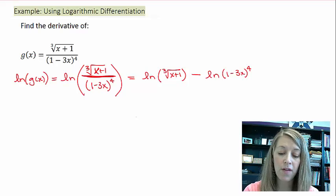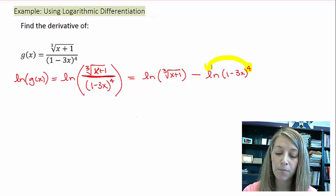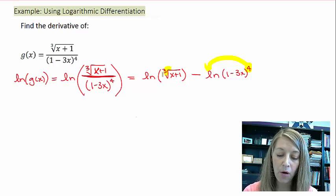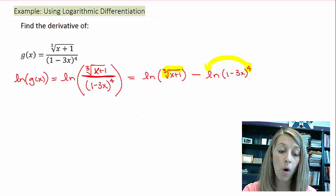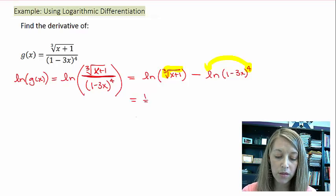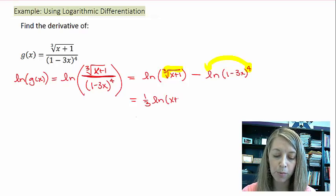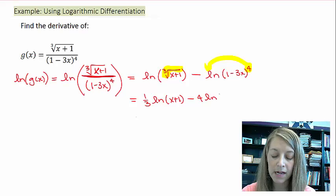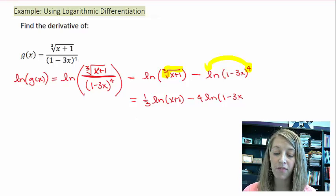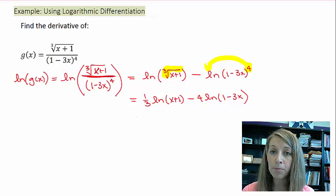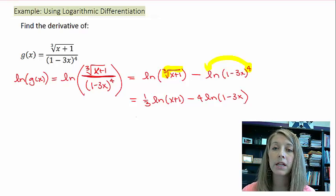Well, how else can we utilize properties of logs here? Well, we know that if a log has a power in it, then that can actually be pulled down in front. So, what's this power here? If I take the cube root of something, that is the one-third power. So, this is one-third times the natural log of x plus 1 minus 4 times the natural log of 1 minus 3x. And so, we have the right-hand side of our equation much more simplified. I don't have to do any more quotient rules. I only have to do little simple chain rules here. And so, the derivative of this is going to be much easier to do at this point.